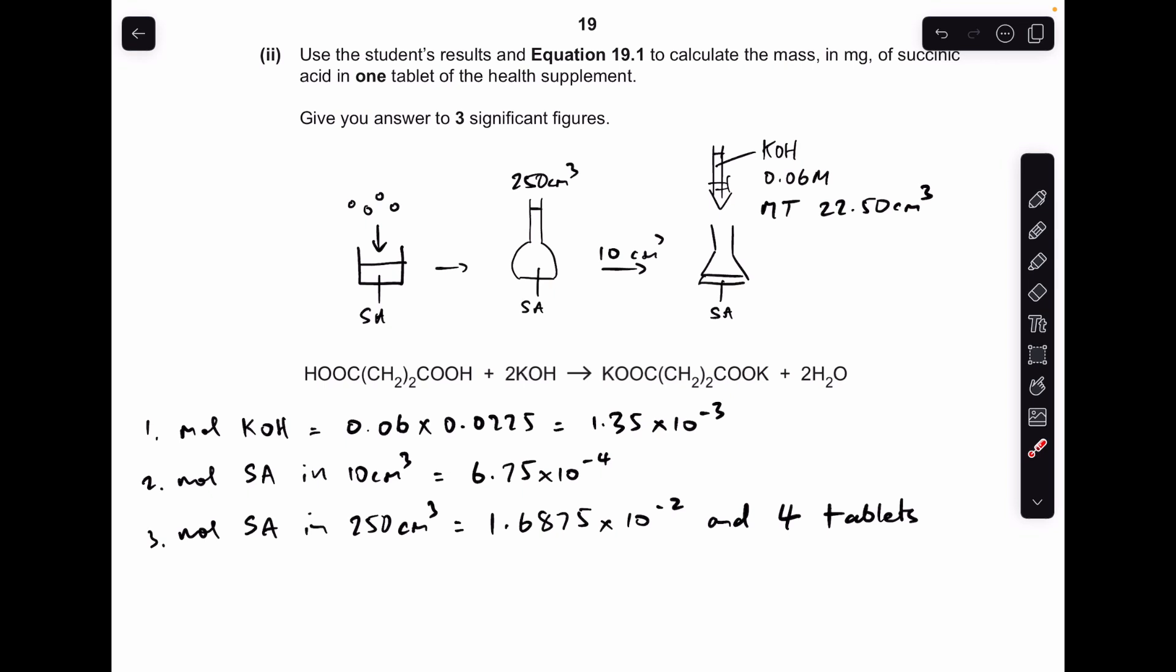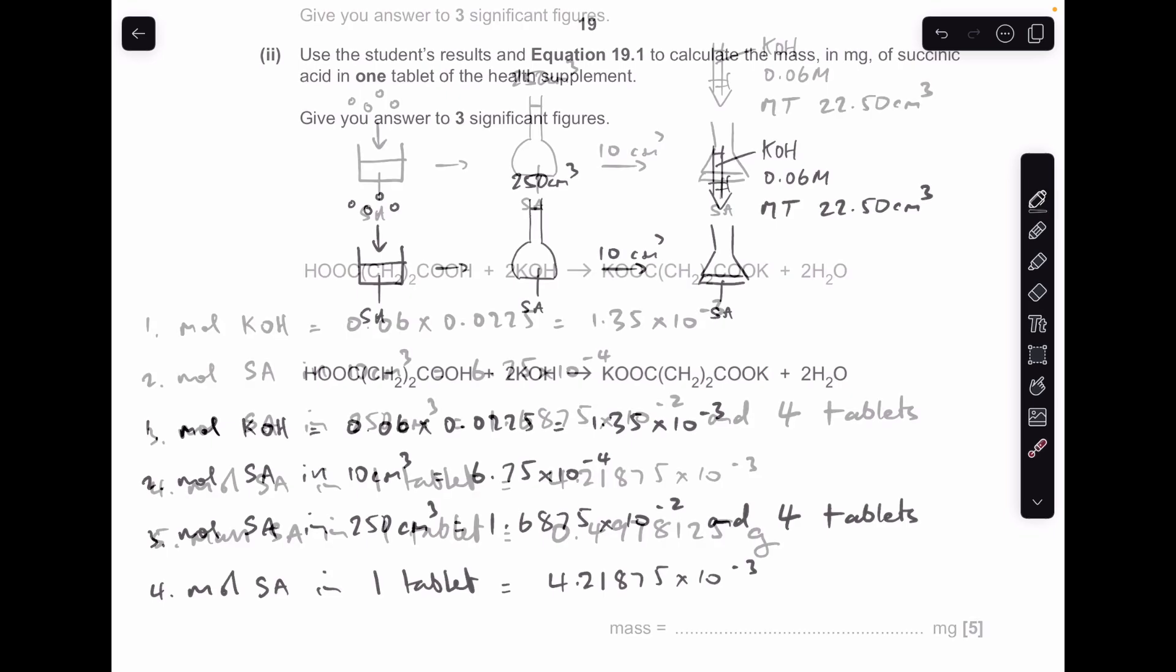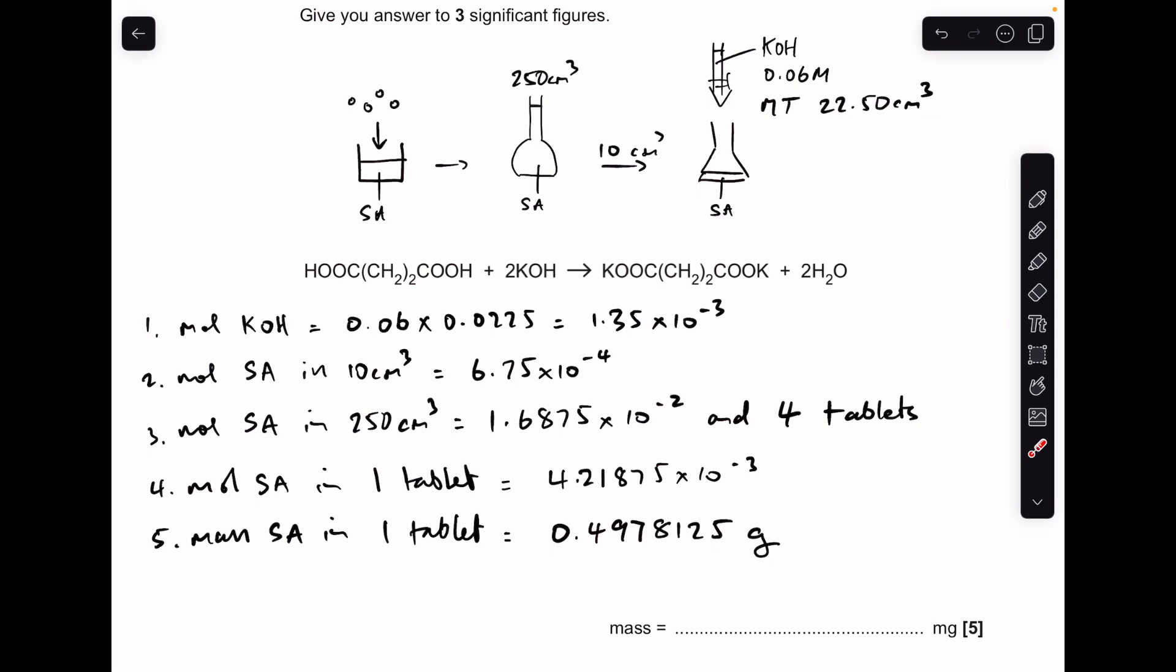So the way I'm going to go now is I'm going to divide this number by 4, and that'll get us the moles of succinic acid in one tablet. So it's 4.21875 times 10 to the minus 3. And now all we need to do is convert that into grams by multiplying by the MR of succinic acid, which is 118, which comes out as that many grams. But they want the answer to three significant figures in milligrams, so we're going to multiply the grams by a thousand. And to three significant figures that's going to come out at 498.